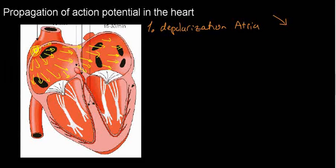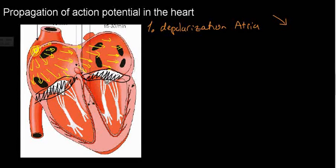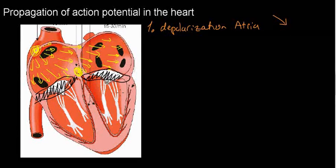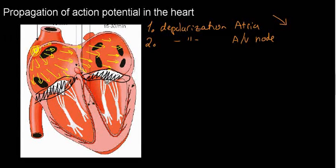We already discussed that this fibrous tissue does not conduct electricity very well, which means the AV node has a monopoly over the action potential — everything has to go through the AV node. So we're going to have depolarization of the AV node. And because the AV node is such a small tissue, we wouldn't really be able to read that activity on the outside.